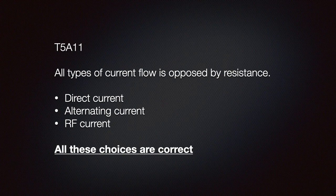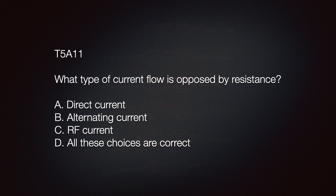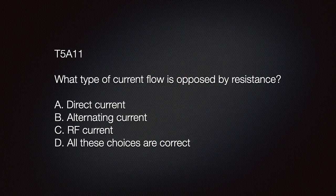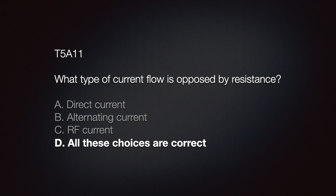We should understand that all types of current flow is opposed by resistance. Direct current, alternating current, and RF current or radio frequency current. All these choices are correct. This slide shows one type of resistor that is common in electronics. Many modern ones are even smaller than these. On your exam you can see this question. What type of current flow is opposed by resistance? A, direct current. B, alternating current. C, RF current. Or D, all these choices are correct. The correct answer being D, all these choices are correct.